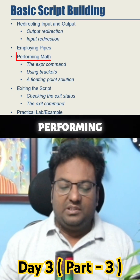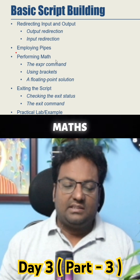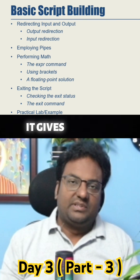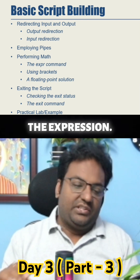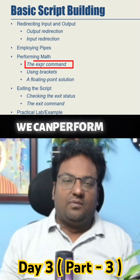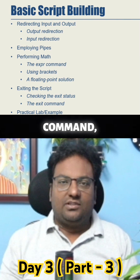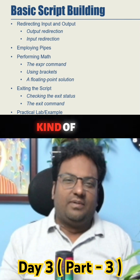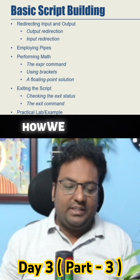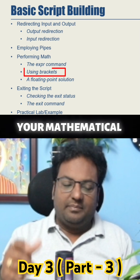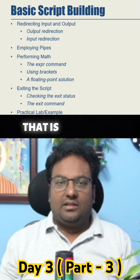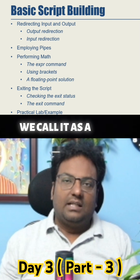Let's move on to the next topic: performing math in bash shell. In a Bourne shell or bash shell, for any mathematical operation, it provides a special command called the `expr` command, which we can use to perform mathematical operations. There is a problem with the `expr` command that I'll show you — it's a little ugly or clunky. Finally, we'll see how to use brackets for math operations and, for floating-point solutions, we have something called `bc`, the built-in bash shell calculator.